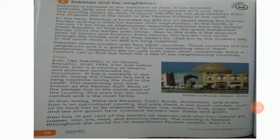Iran is a country of deserts and plateaus surrounded by mountains. It has a coastline in the north along the Caspian Sea and a long coastline along the Gulf in the south. This waterway was once known as the Persian Gulf. Most of the people live in the northwest of the country, as this area has the most rainfall.